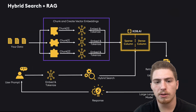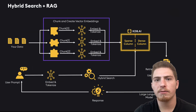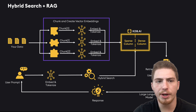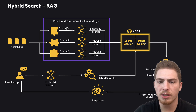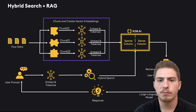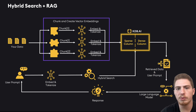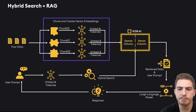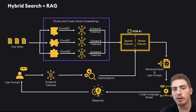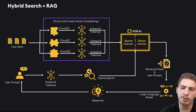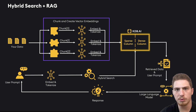Hybrid search is also a good add-on for a RAG pipeline. If we're creating a RAG pipeline with hybrid search, it's going to look very similar to a typical RAG pipeline. We have our data, we chunk it, and instead of just embedding it, we embed and tokenize it and insert our vectors into our sparse and dense columns in KDBAI. Then when we have a user prompt, we embed and tokenize the user prompt, do a hybrid search on the database, return the relevant data, and insert it into a large language model.